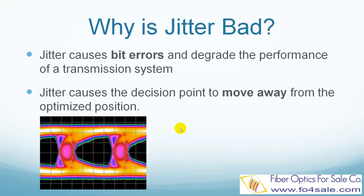So why is jitter bad for a fiber optic communication system? Here is the eye diagram that shows the distortions caused by jitter. In order to accurately determine whether a given bit is a 1 or a 0, the signal should be sampled at the point where the vertical eye opening is maximum. This decision point is set by the recovered clock signal from the data bits. But jitter causes this decision point to move away from the maximum eye opening point. So the decision of a 1 or 0 can be wrong if the jitter is too big, causing bit errors and degrading the performance of a transmission system.